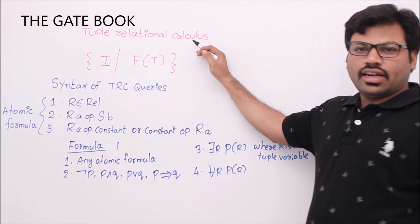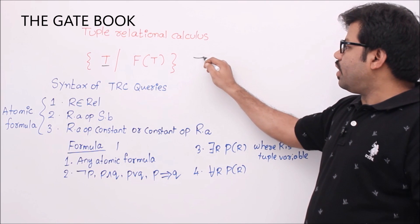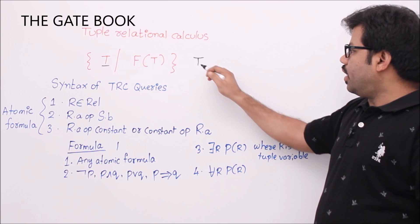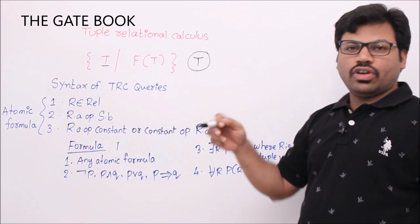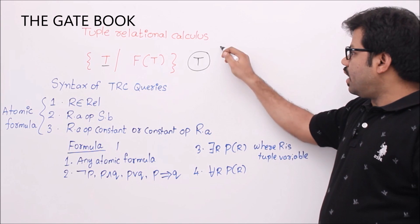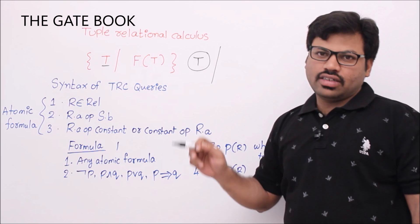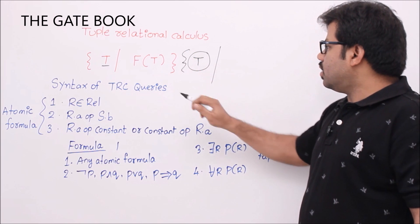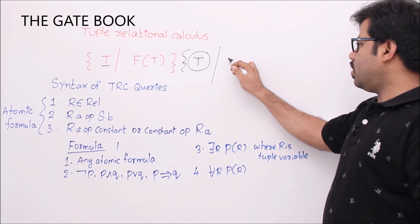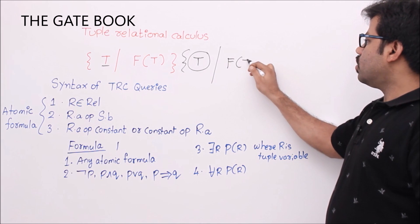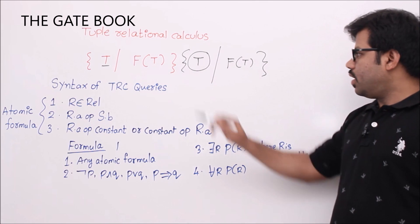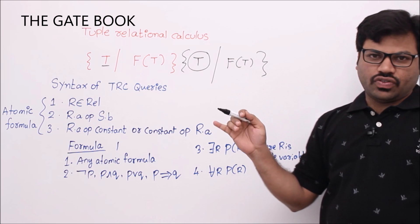What is tuple relational calculus? Here we write queries in the form of first-order logic formulas, and T is a tuple variable. We know what a tuple is — it's a row. T is a tuple variable, and we say that this tuple variable is our answer. Tuple variables are our answer if that tuple variable satisfies a formula. This is the general structure of any tuple relational calculus: T where f(T) is satisfied.